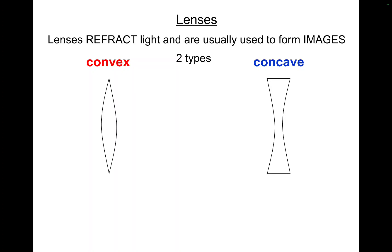Now that's what they look like. You can do a shorthand version — a convex lens is just a straight line with arrows like this, and a concave lens is a straight line with arrows that look like this. When you do your diagrams, rather than sketch out a full convex or concave lens, you can just use that abbreviation.